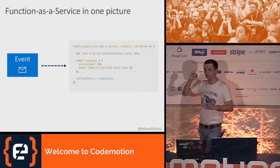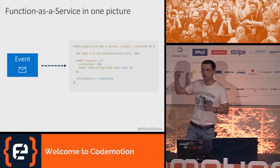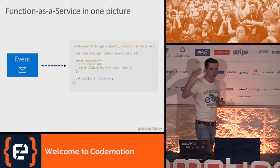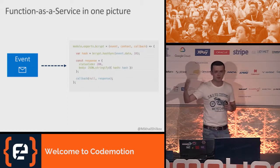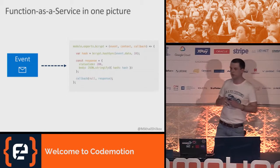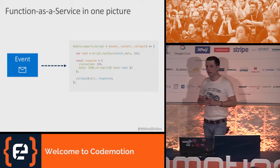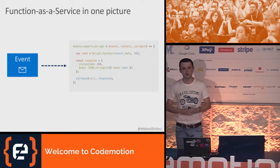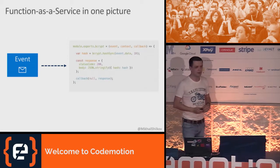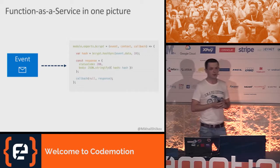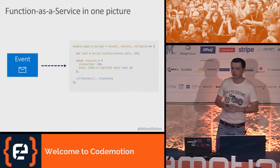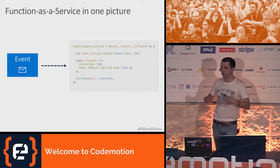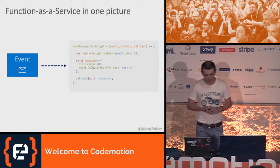For example, when a user hits an HTTP endpoint, or a message comes to a queue, or a file is uploaded, you say I want to run my function in this case. Then you package this, give it to your cloud provider, and it's good — because now it's their responsibility to make sure it runs all the time. Very simple, very easy to start with, very compelling.